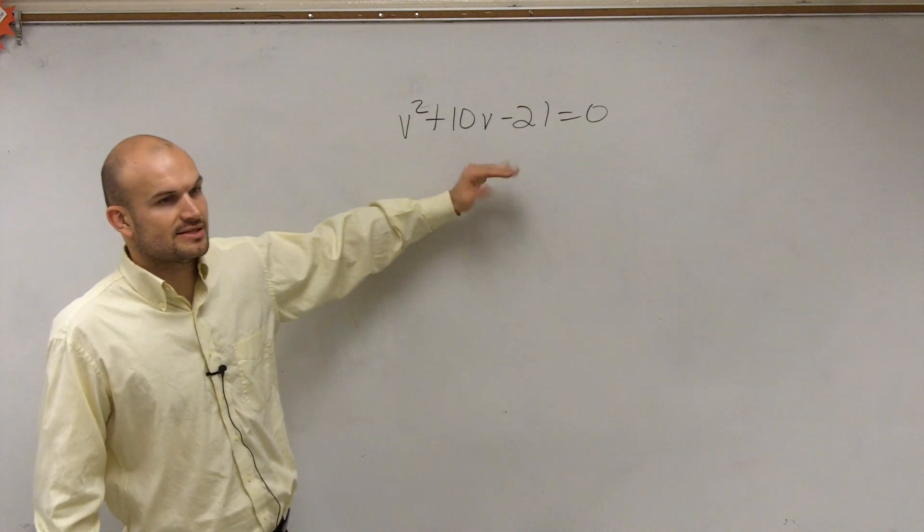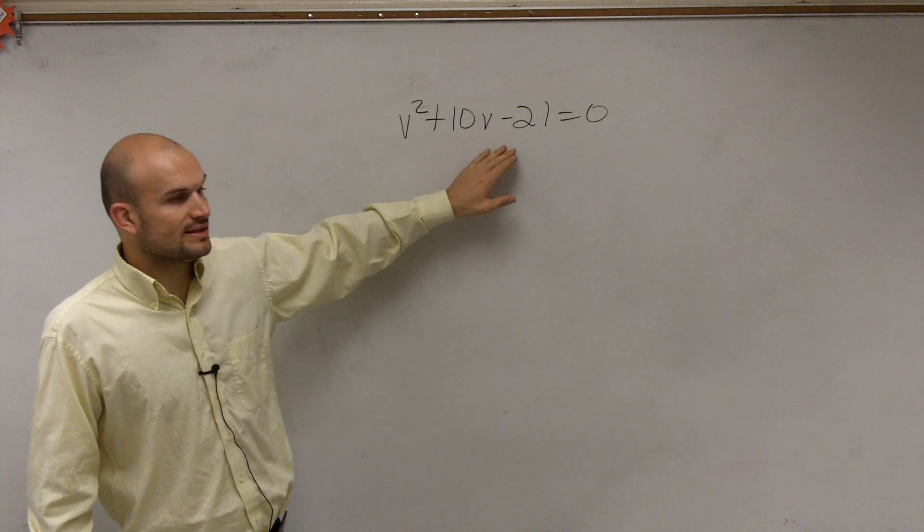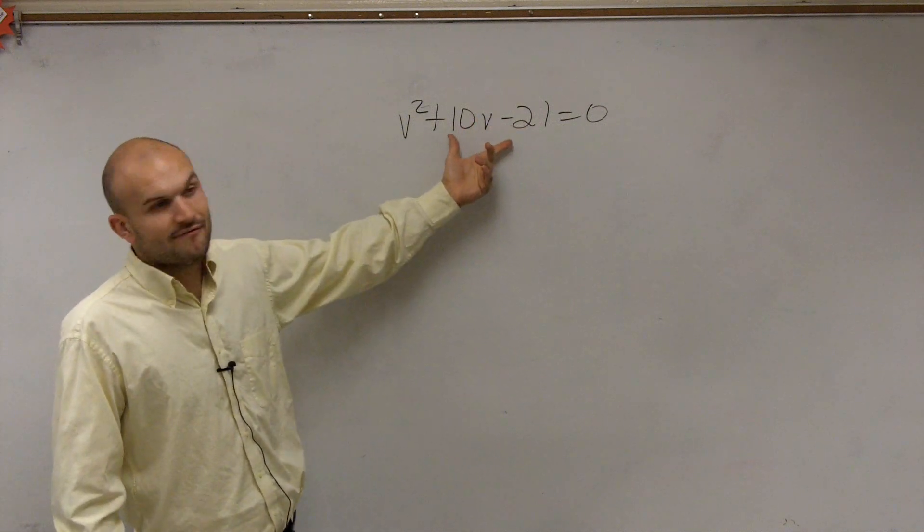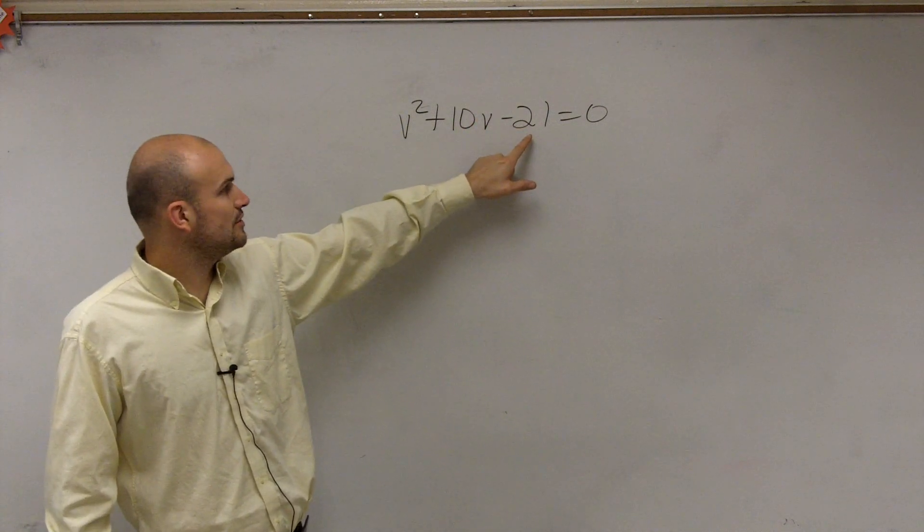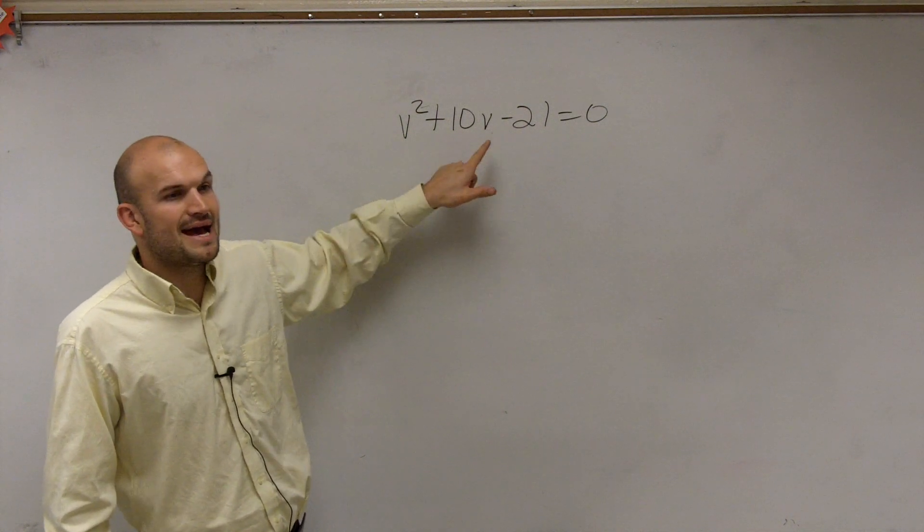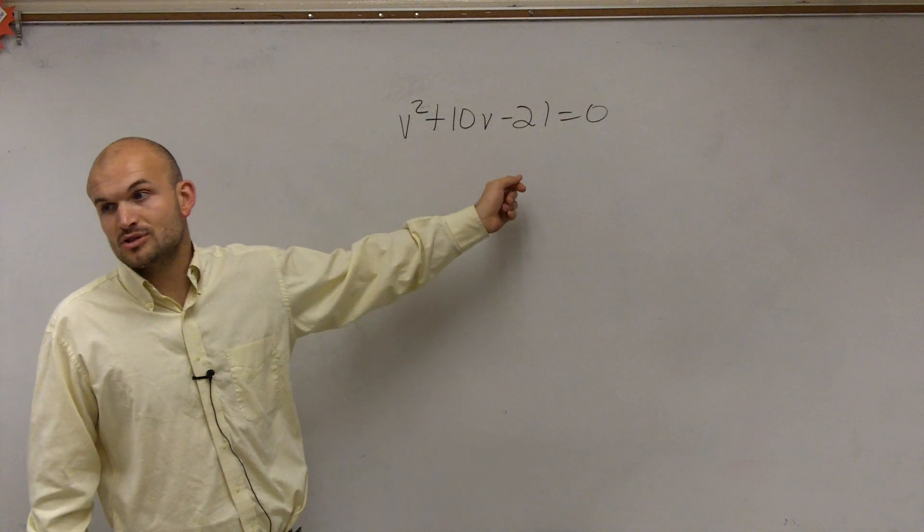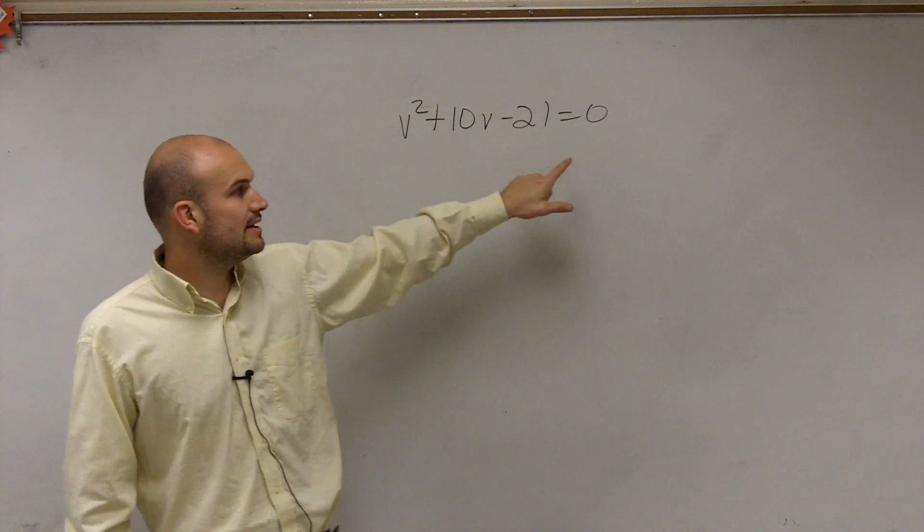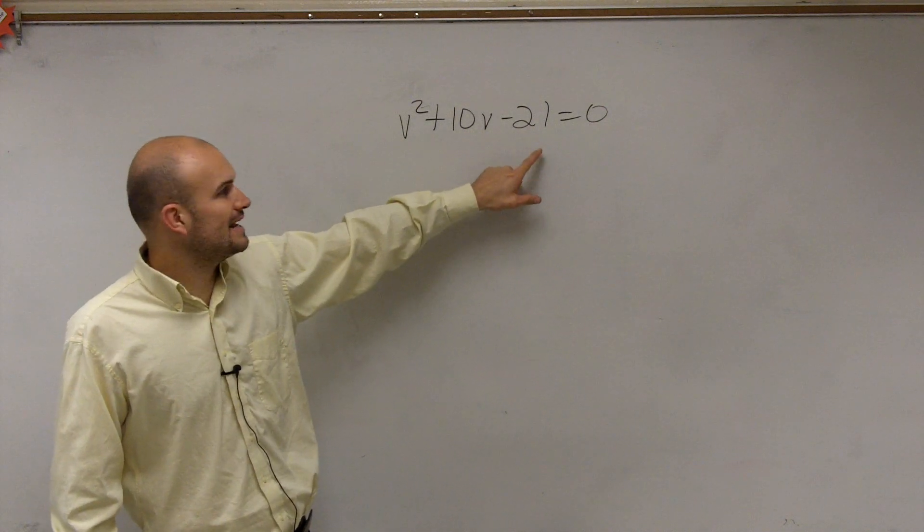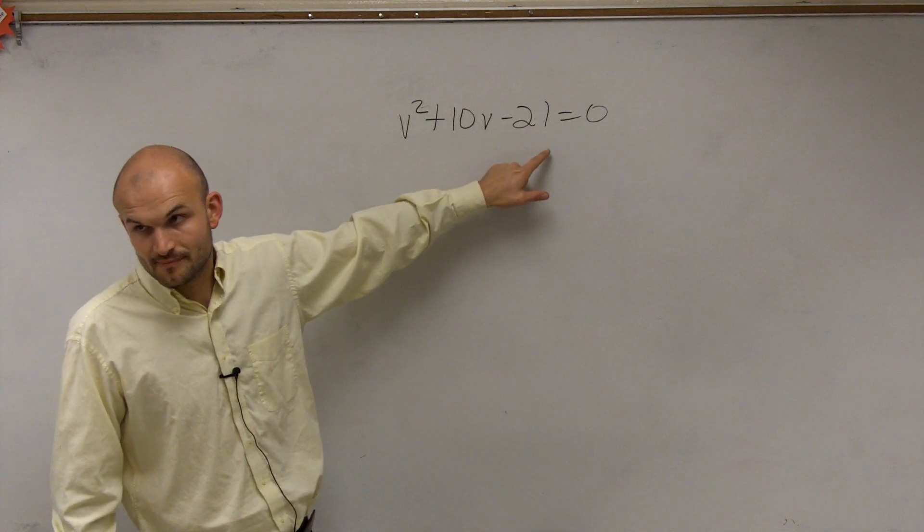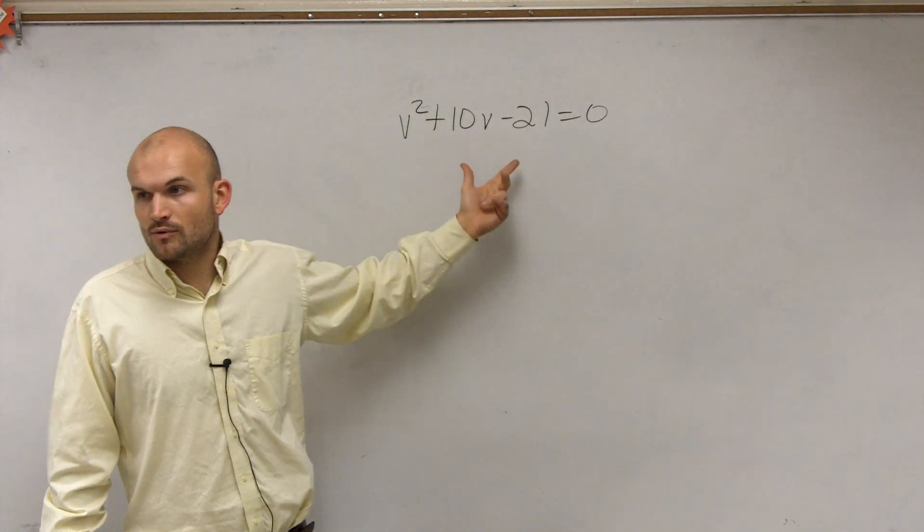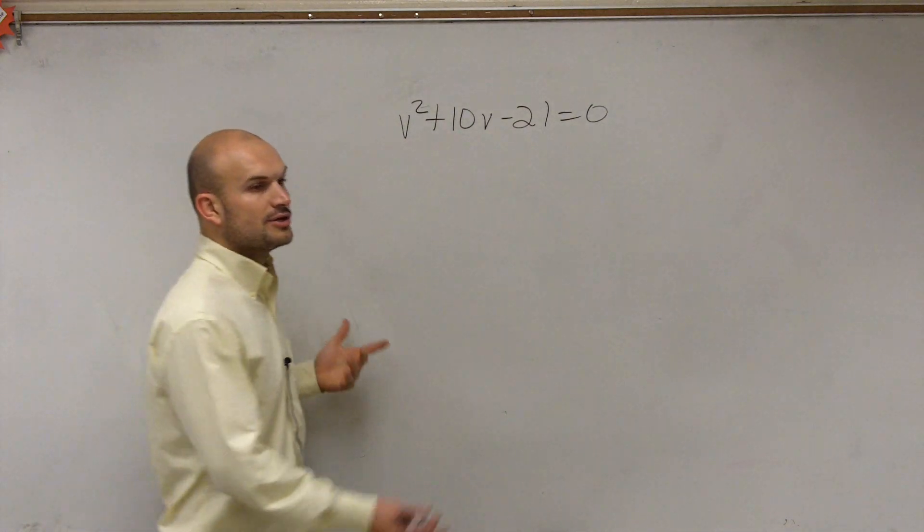So first of all, we look at this, and whenever I say solve, you know, one thing guys, you already looked at this, you could say, well, can we factor this? You can't factor this. There's no two numbers that multiply to give you negative 21 but add to give you 10. The only two numbers I know that multiply besides 21 and 1 are 7 and 3. They do add 10, but one of them has to be negative for you to get a negative 21, right? So you can't factor this, and you can't solve for it because we have two terms, one's squared and one's linear. So what we're going to do is complete the square.